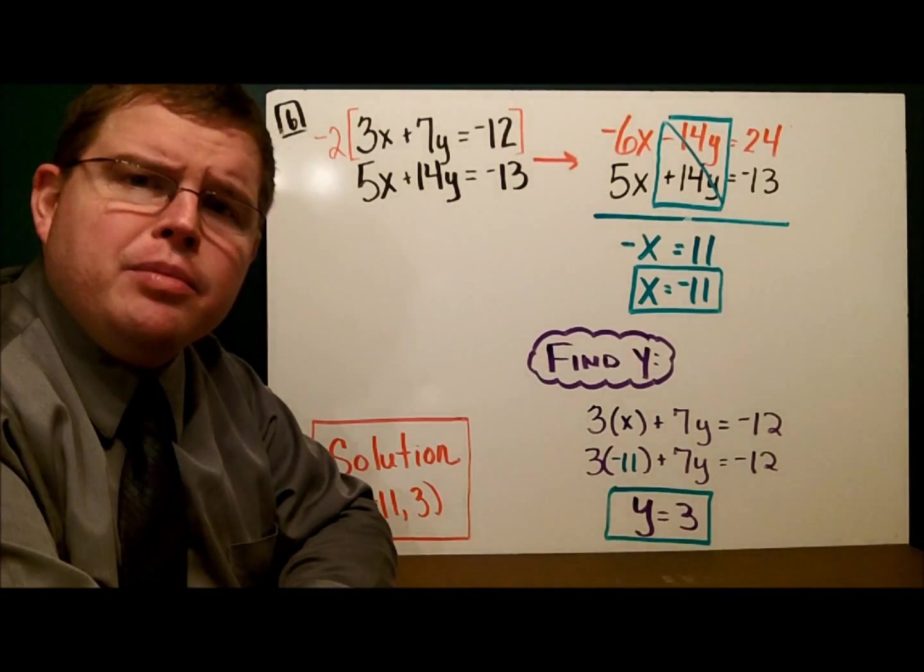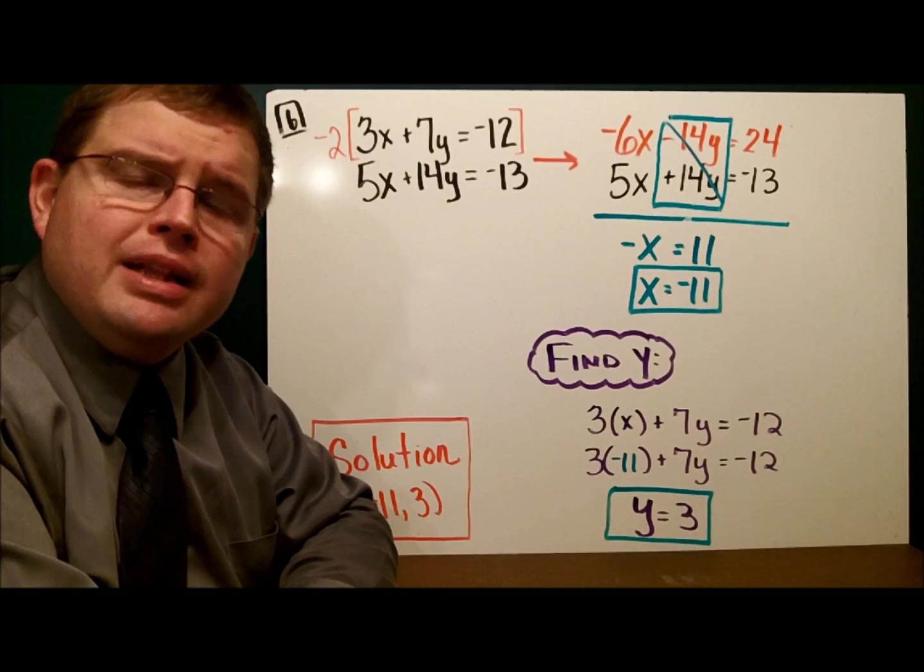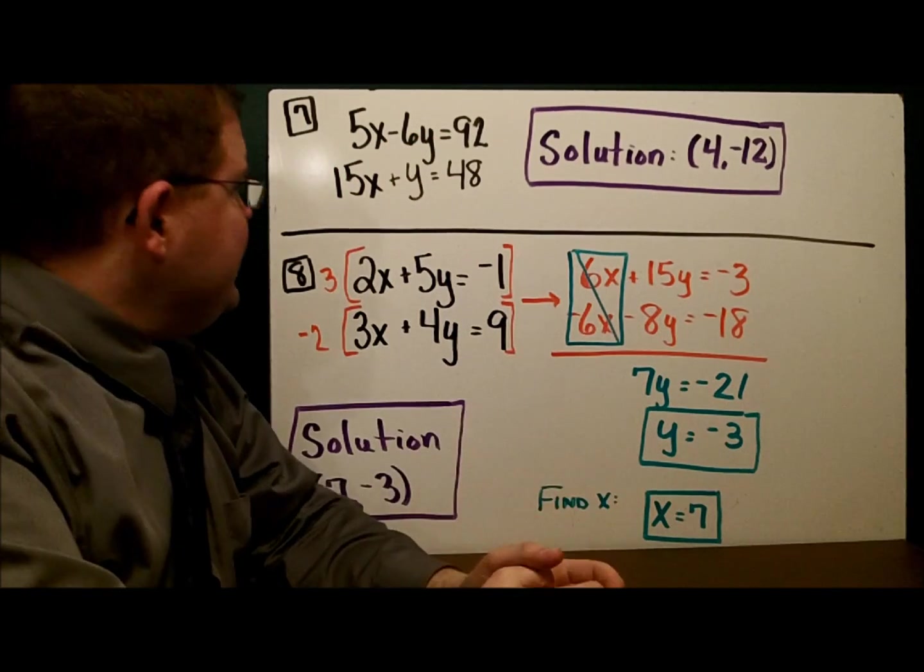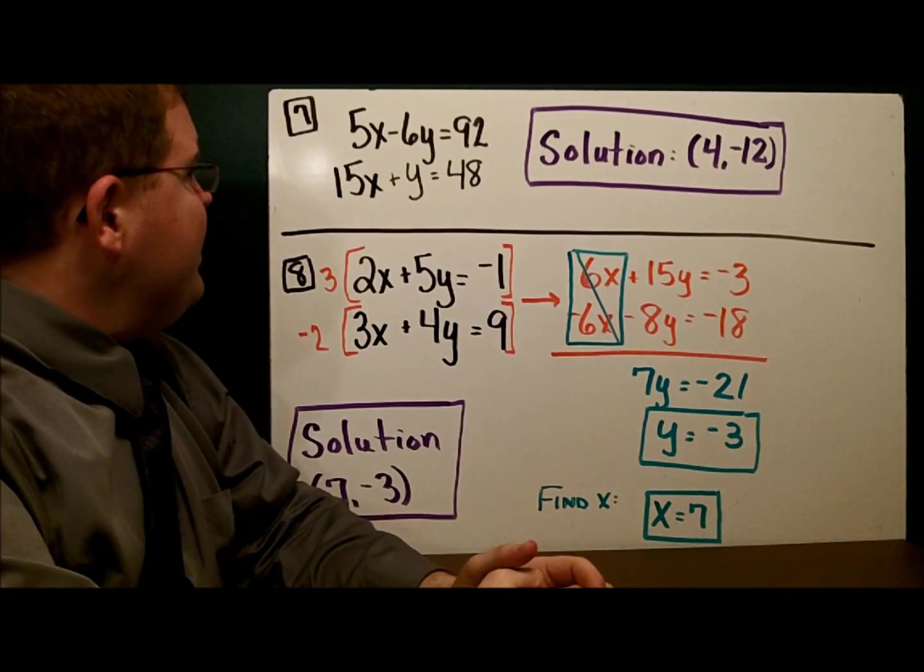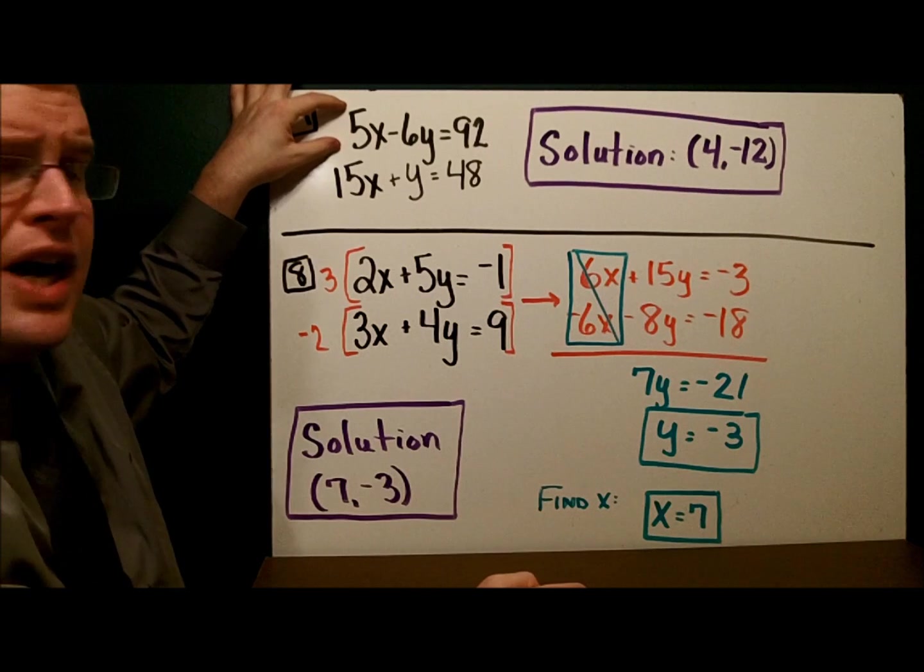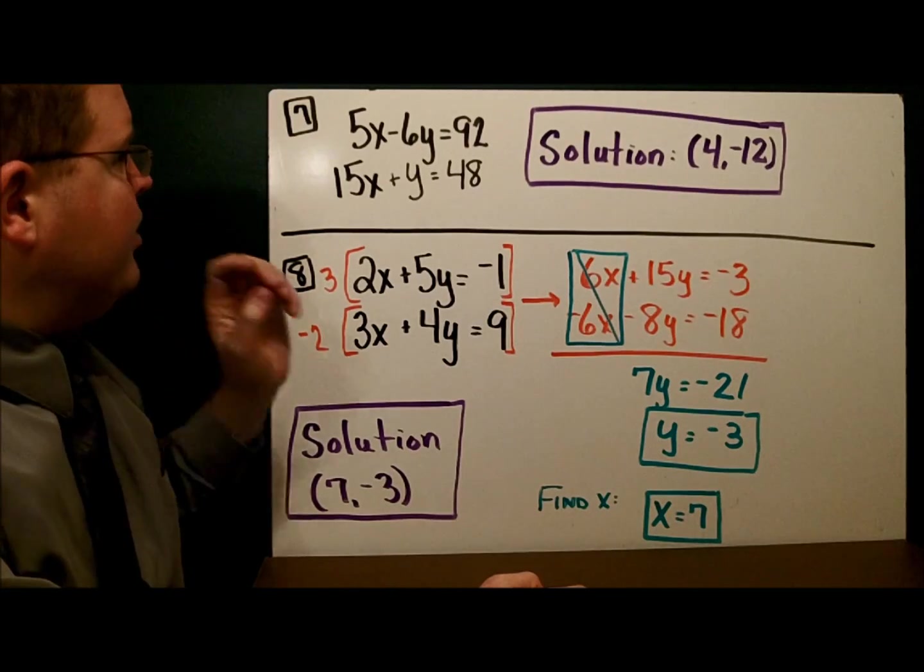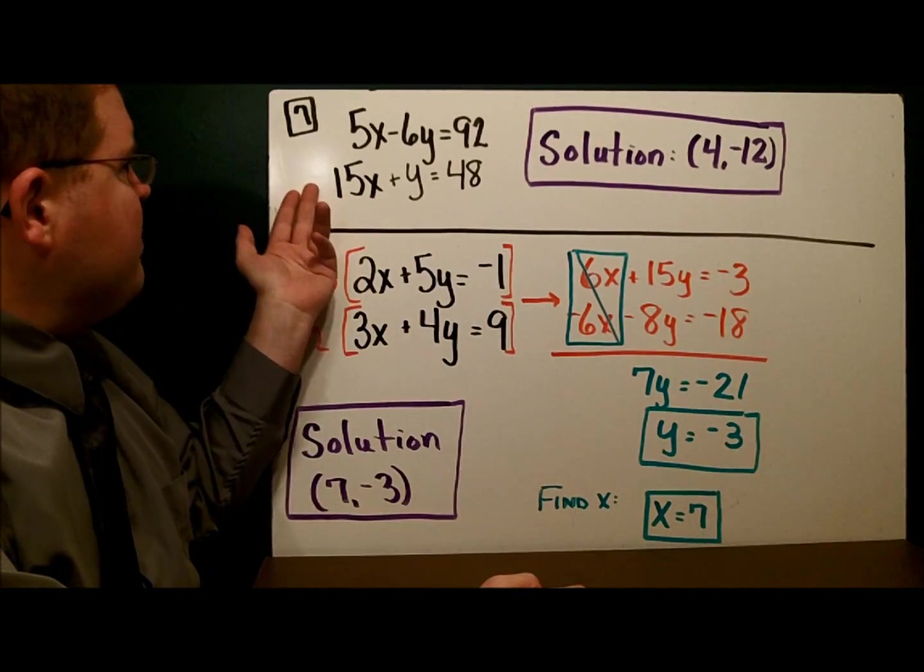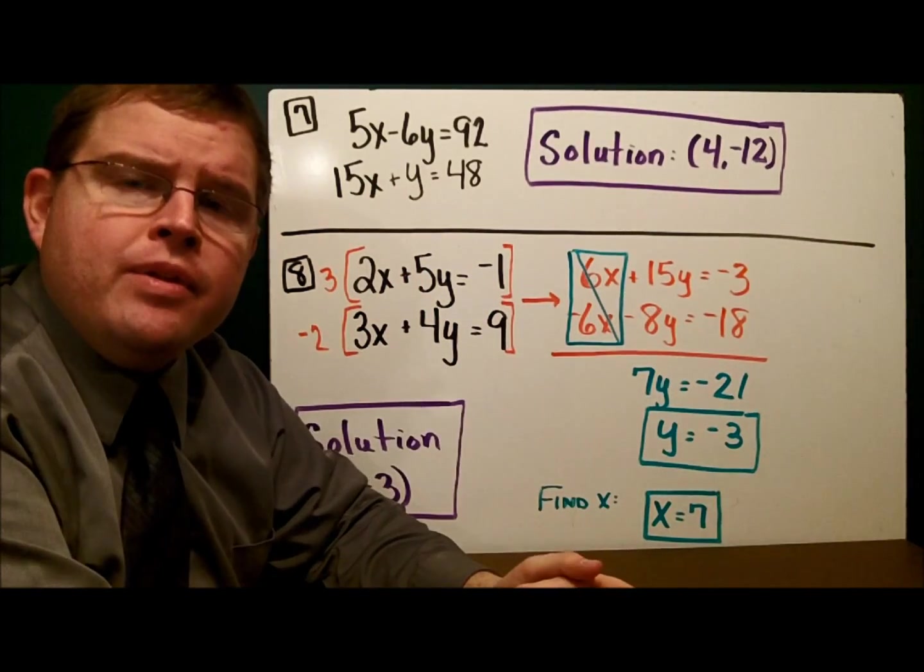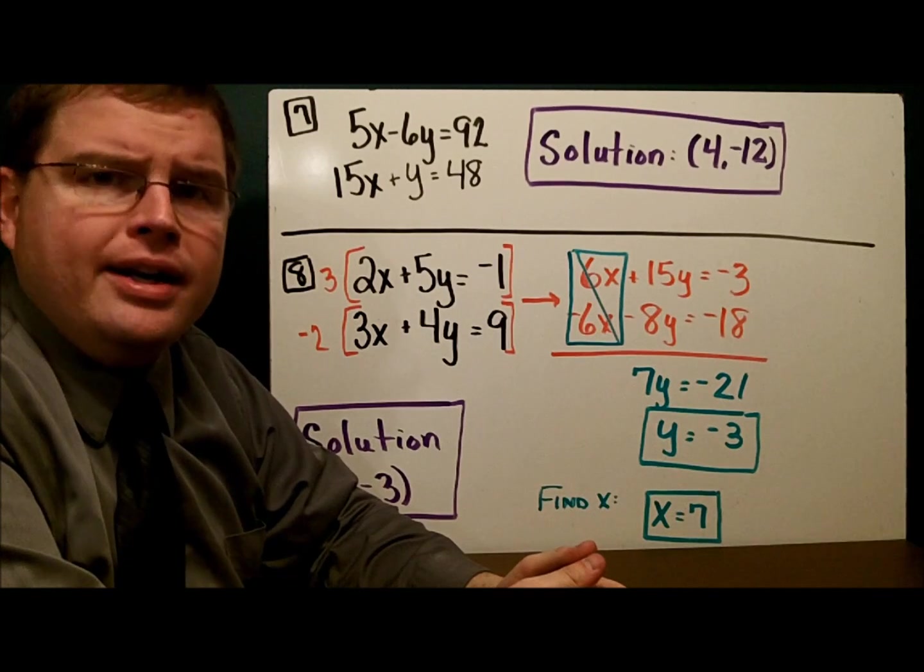I'm going to ask you to try the next example. Let's take a look. On the next example, we have 5x minus 6y equals 92, and 15x plus y equals 48. You had several methods here you could do. You could have multiplied the top one by negative 3 because that would have given you a negative 15 and a positive 15. Or, perhaps you decided to multiply the bottom one by 6 so that you'd have a negative 6 and a positive 6. Either method would work. No matter which method you chose, you should have come out with a solution of (4, -12).